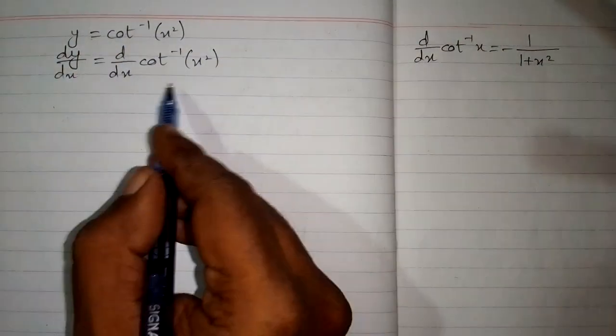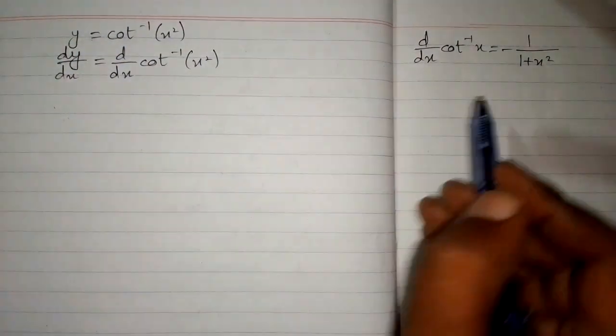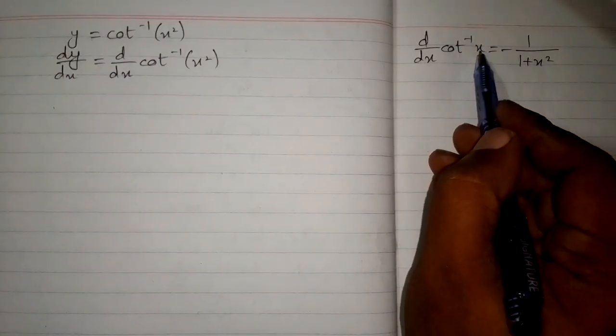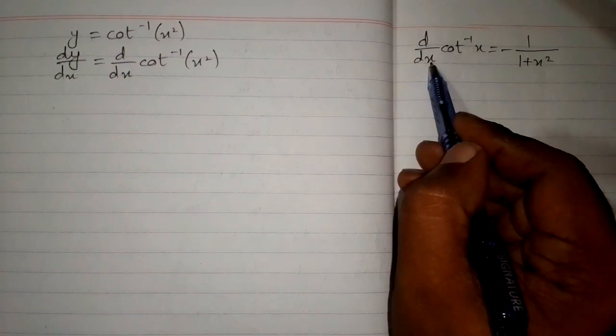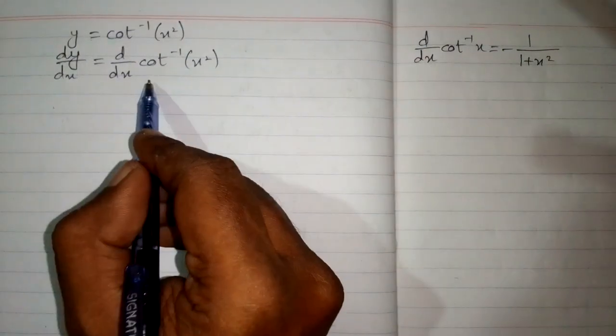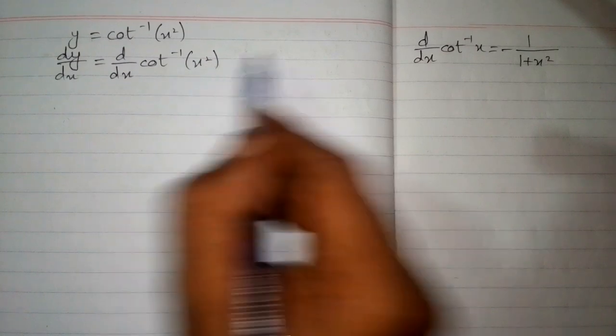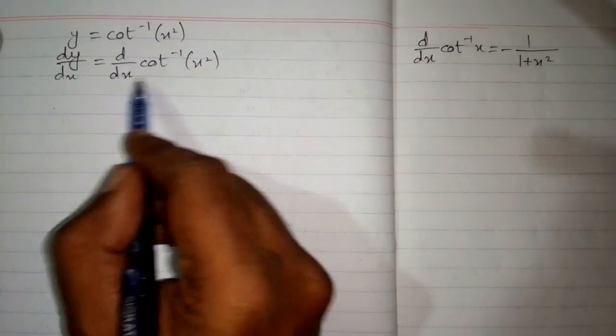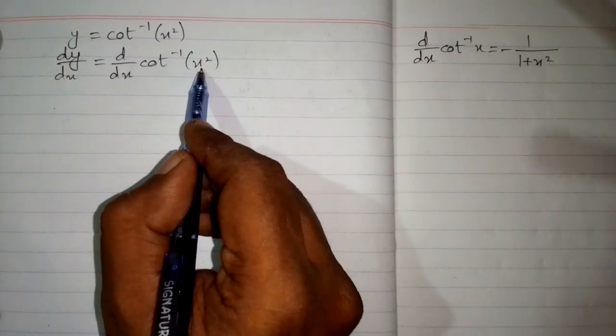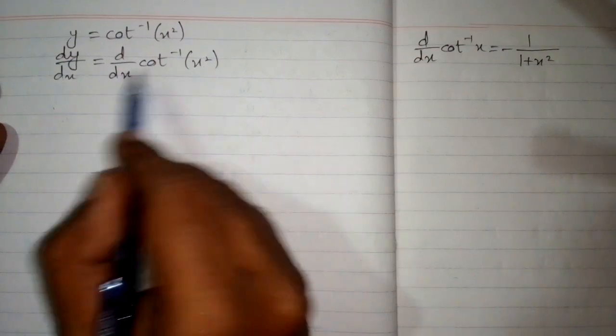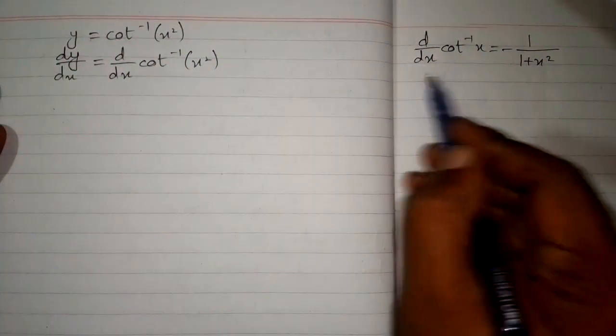So we can apply this formula but we must have the same variable over here and over here. We cannot apply this formula directly because we have x and here we have x squared. These variables must be same in order to apply this formula.